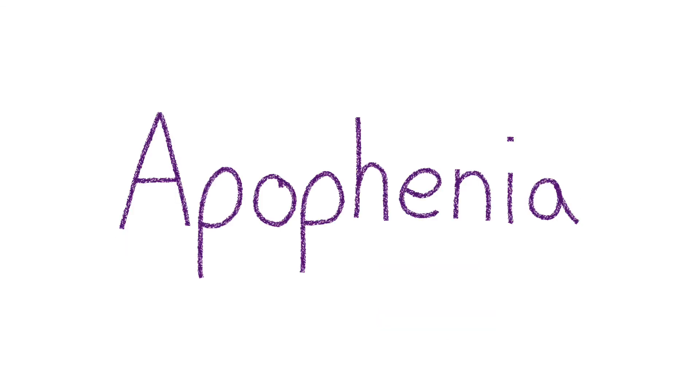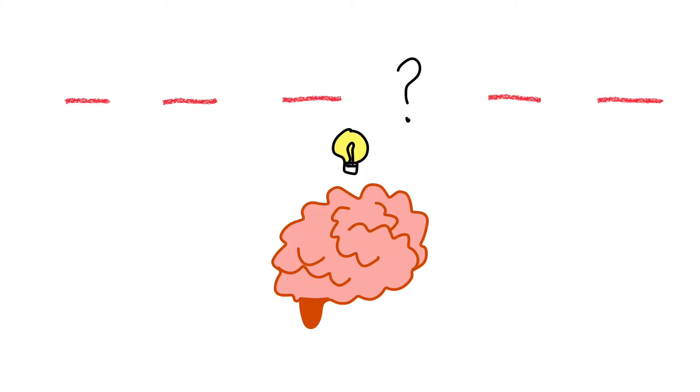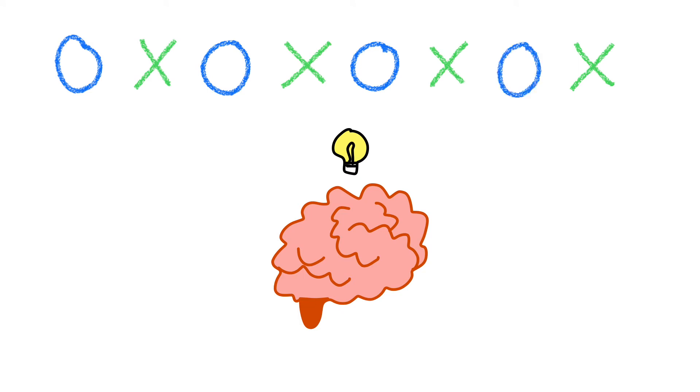Apophenia is when people see a meaningful pattern in unrelated or random things. Our brains are pattern-detecting machines that have been trained to see patterns in almost anything.